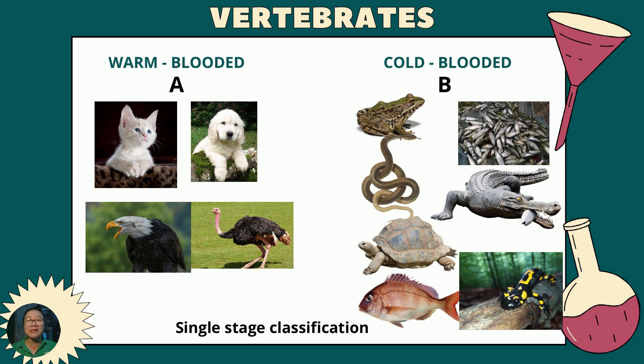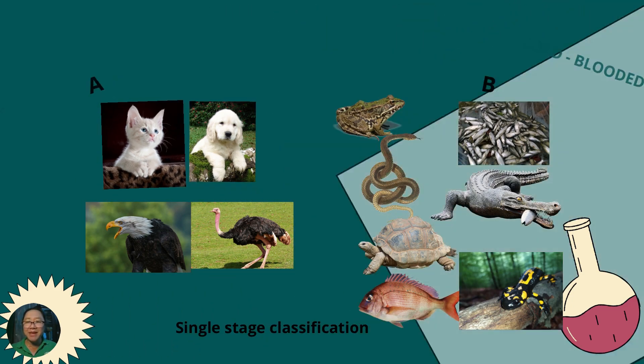On the other hand, cold-blooded animals include the frog, snake, milkfish, bamboos, tilapia, turtle, crocodile, and salamanders. We label this as B.